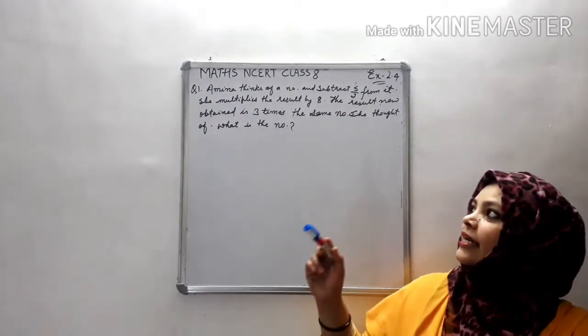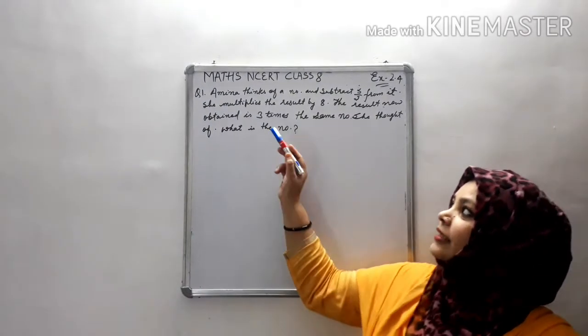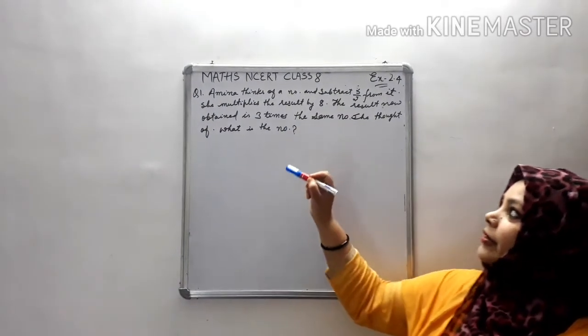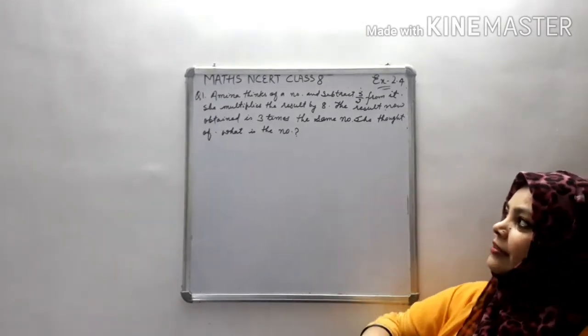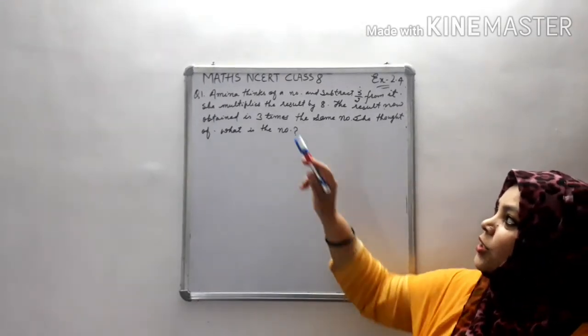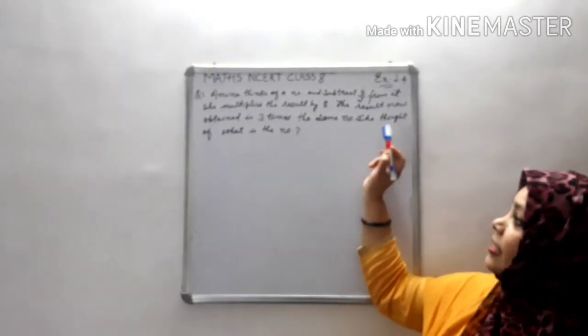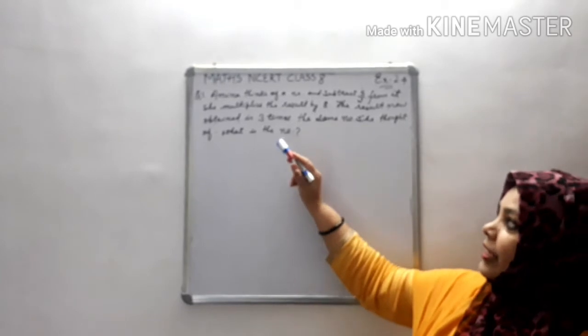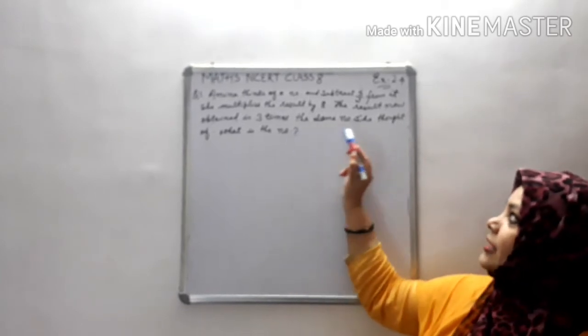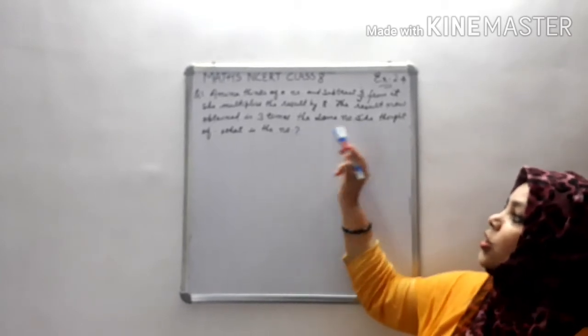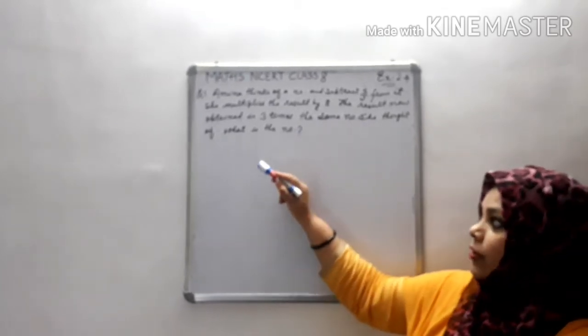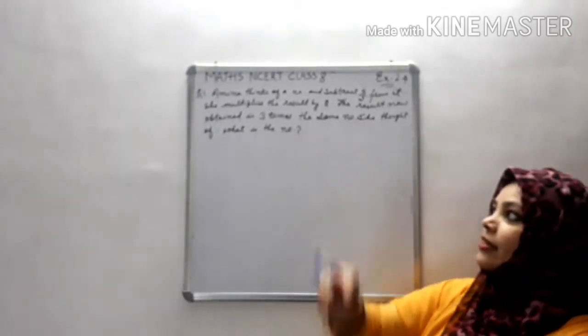The first question says: Amina thinks of a number and subtracts 5/2 from it. She multiplies the result by 8. The result now obtained is 3 times the same number she thought of. What is the number?